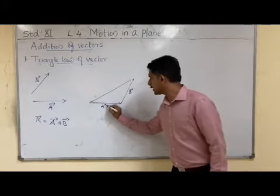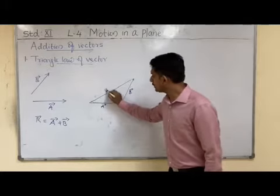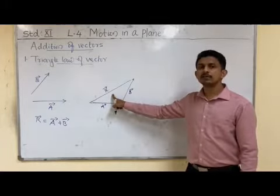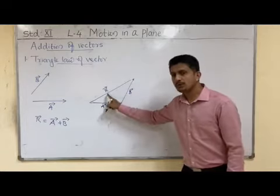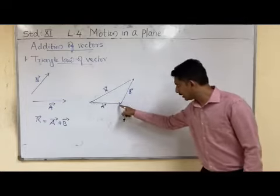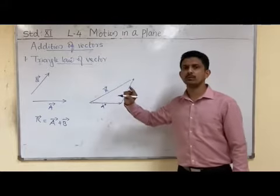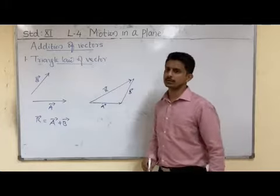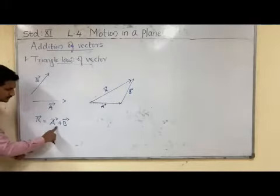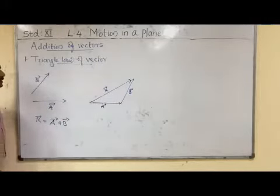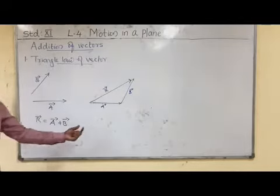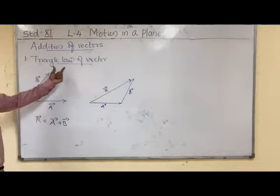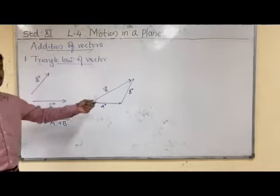Vector A is coming this way, vector B is coming this way, so we represent our resultant vector as the third side of the triangle taken in the opposite direction. The resultant vector R represents the magnitude and direction of A plus B. By this graphical method we can add two vectors, and if we follow this method, it is known as the triangle law of vector addition.